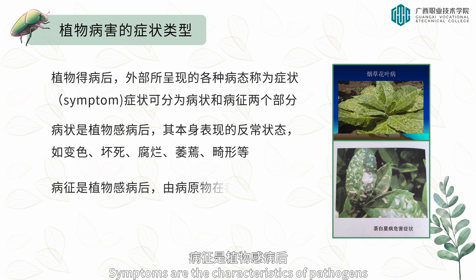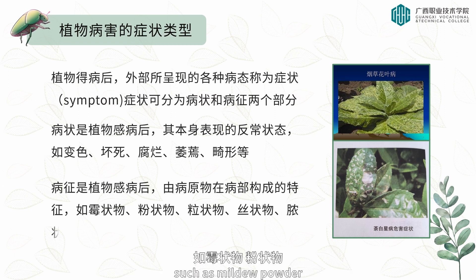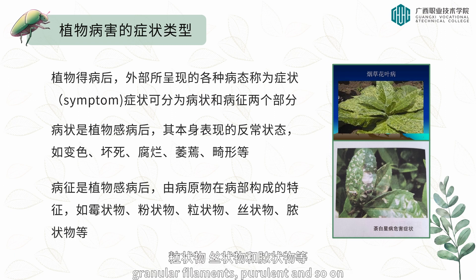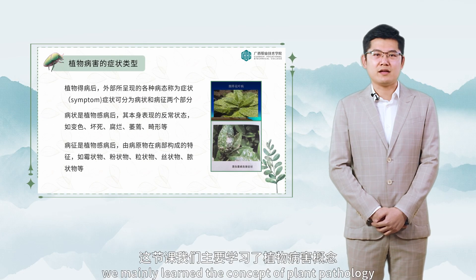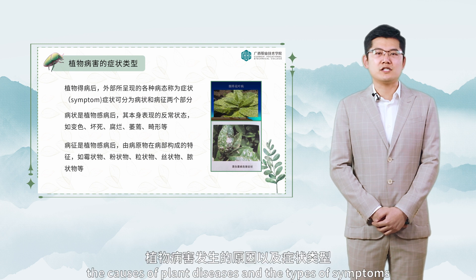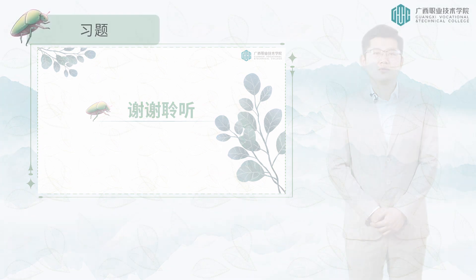Symptoms are the characteristics of pathogens in the diseased area after plant infection, such as mildew powder, granular filaments, pustules, and so on. In this lesson, we mainly learned the concept of plant pathology, the causes of plant diseases, and the types of symptoms. These are all the contents of this lesson. Thank you.